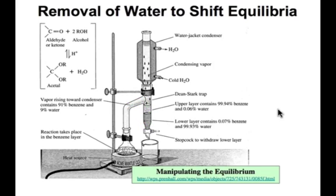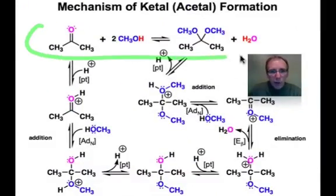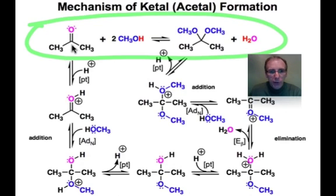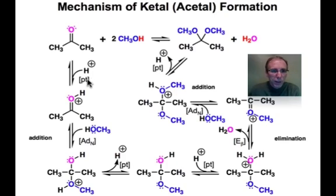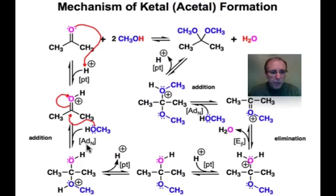Now let's look at the mechanism. The overall stoichiometry shown at the top takes acetone combined with two equivalents of methanol to make the ketal, along with water as the byproduct. These reactions are conducted in the presence of an acid catalyst, whose purpose is to enhance the electrophilicity of the carbonyl group. To begin, we do a proton transfer to the carbonyl oxygen to make the pi bond a better electrophile. This sets up nucleophilic addition to a polarized pi bond. This AdN step generates the tetrahedral intermediate with the positive charge on the oxygen that came from methanol.